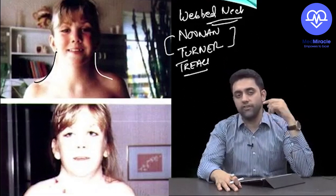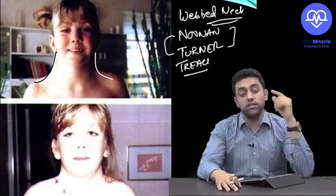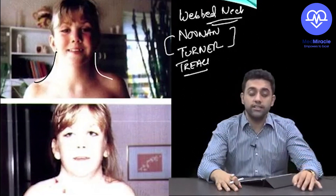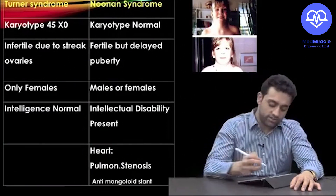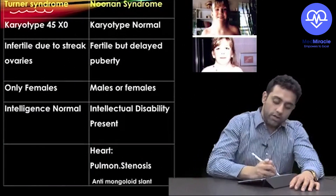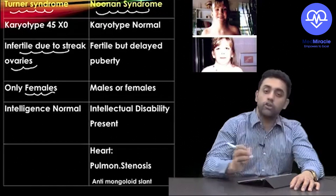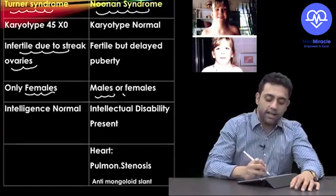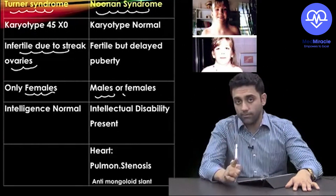To differentiate: Turner Syndrome presents with webbed neck in females, streaking of ovaries, infertility, and normal IQ. Noonan Syndrome affects both males and females; they are fertile but have delayed puberty — so they can have babies but puberty is delayed.